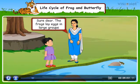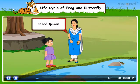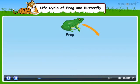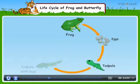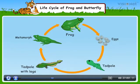Sure, dear. The frogs lay eggs in large groups called spawns. The frog lays eggs which hatch into tadpoles. The tadpole is very different from a frog. A complete change from the young form to the adult form is called metamorphosis.